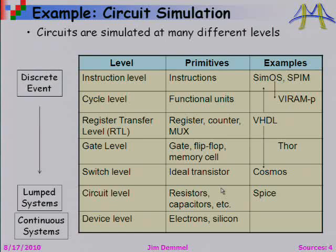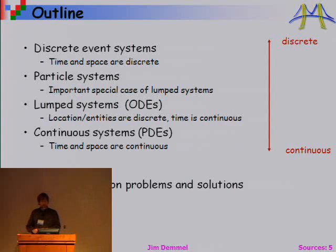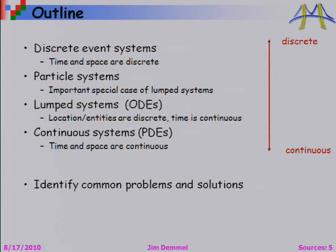So here they are again. I'm going to talk about discrete event systems where everything is discrete — time and space. Particle systems, where the particles are discrete but moving continuously in time — Newton's Law is something like that. Then more generally, lumped systems where time is continuous. And then PDEs. I'll try to identify the common problems and solutions for all of these.